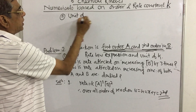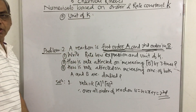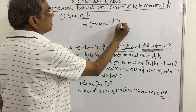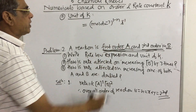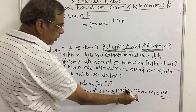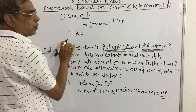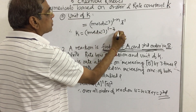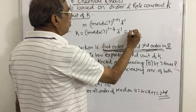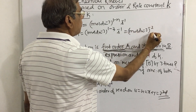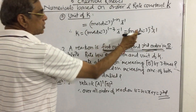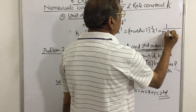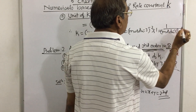In the last period we studied how to write the unit of rate constant k. The general formula is: mol per dm³ raised to the power (1 minus n) times second inverse, where n is the order of reaction. Putting in the value, since it is third order, the unit of k equals mol per dm³ raised to the power (1 minus 3) times second inverse, which equals mol per dm³ raised to the power minus 2 times second inverse.